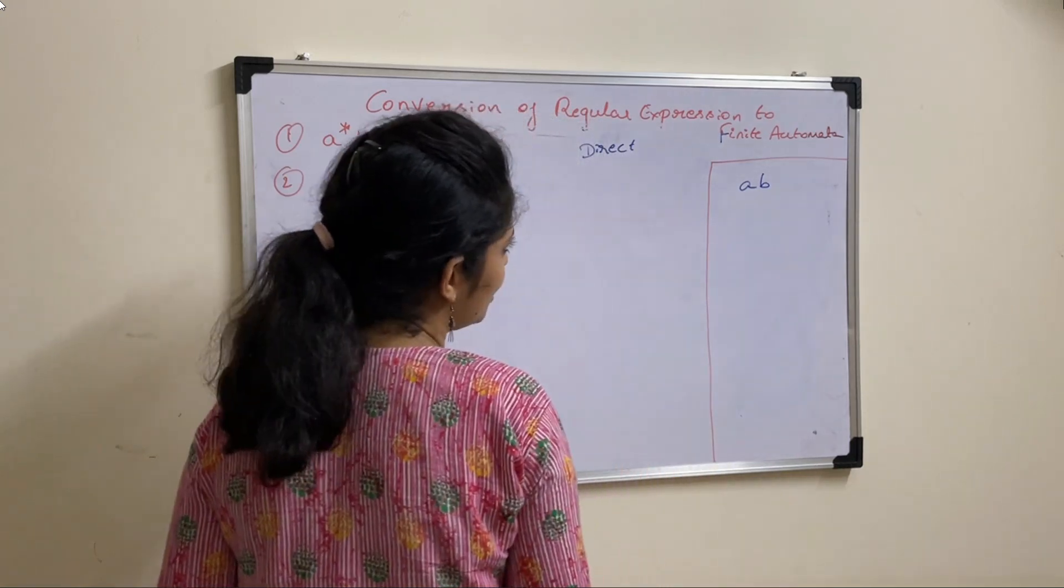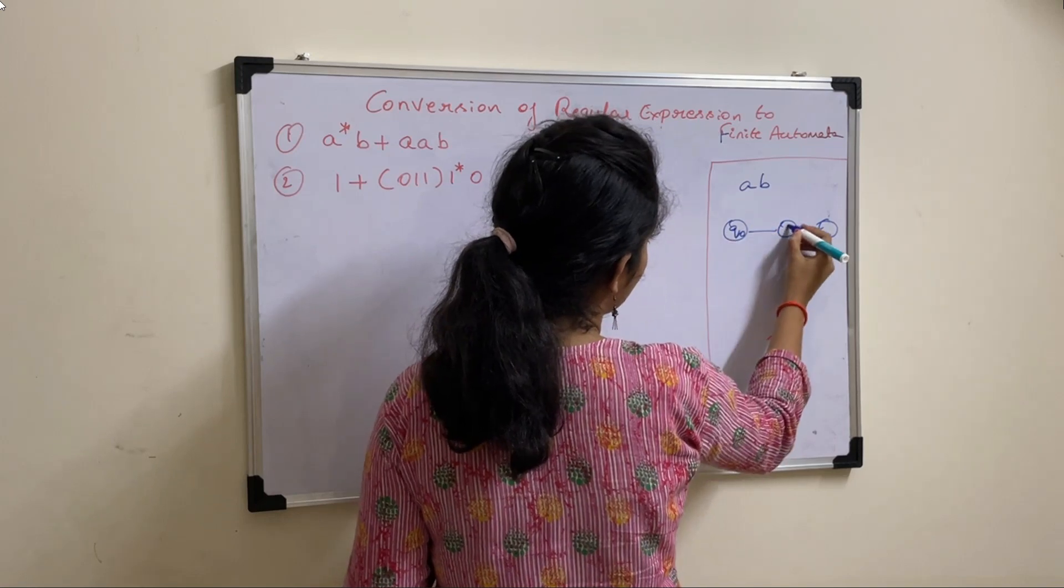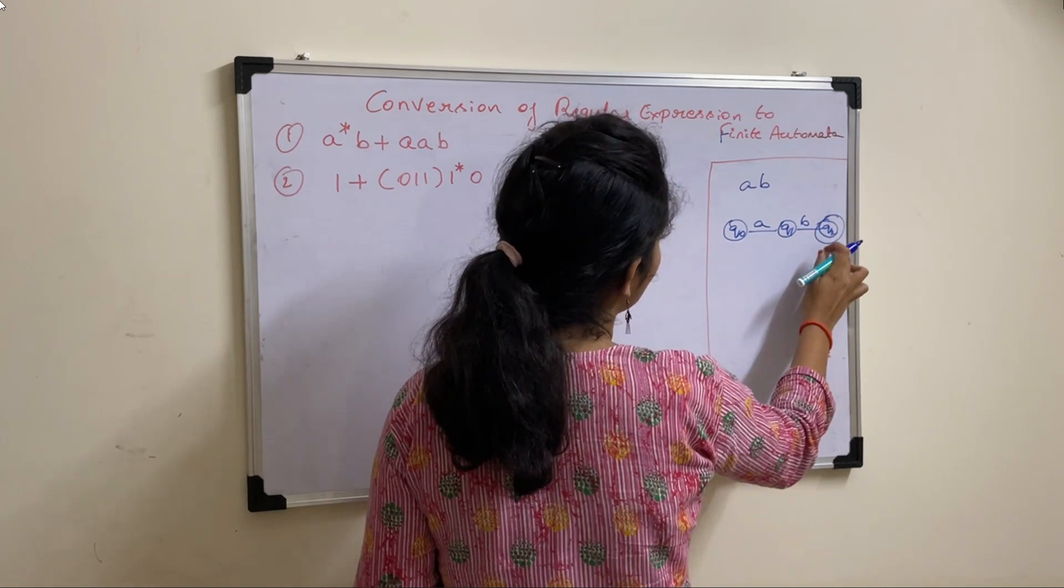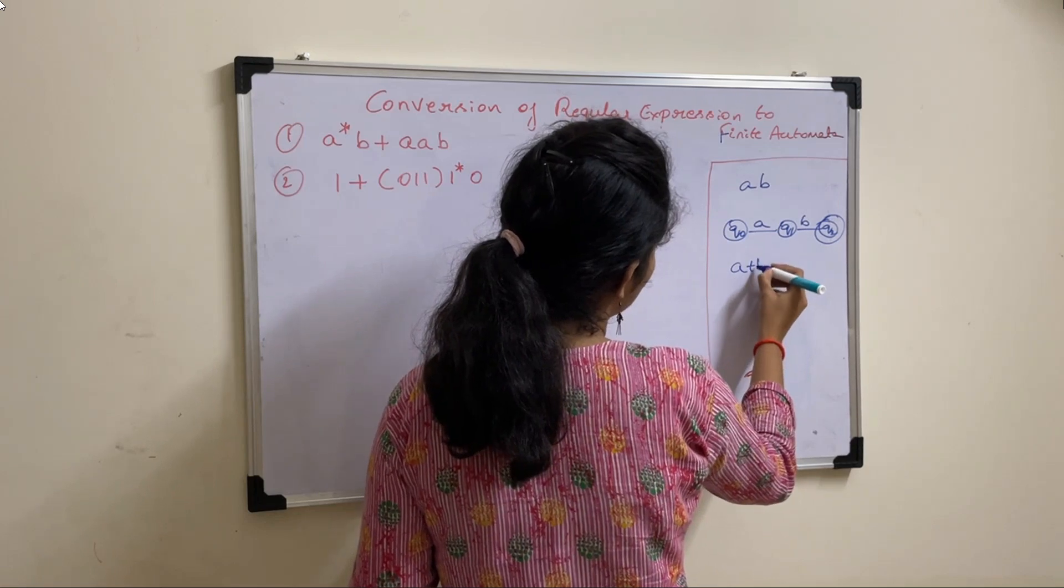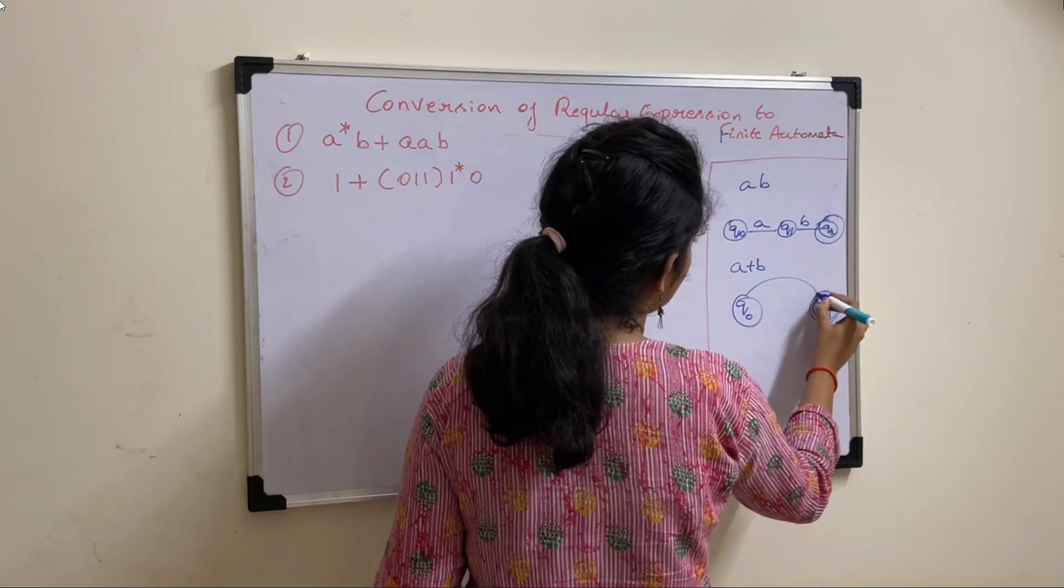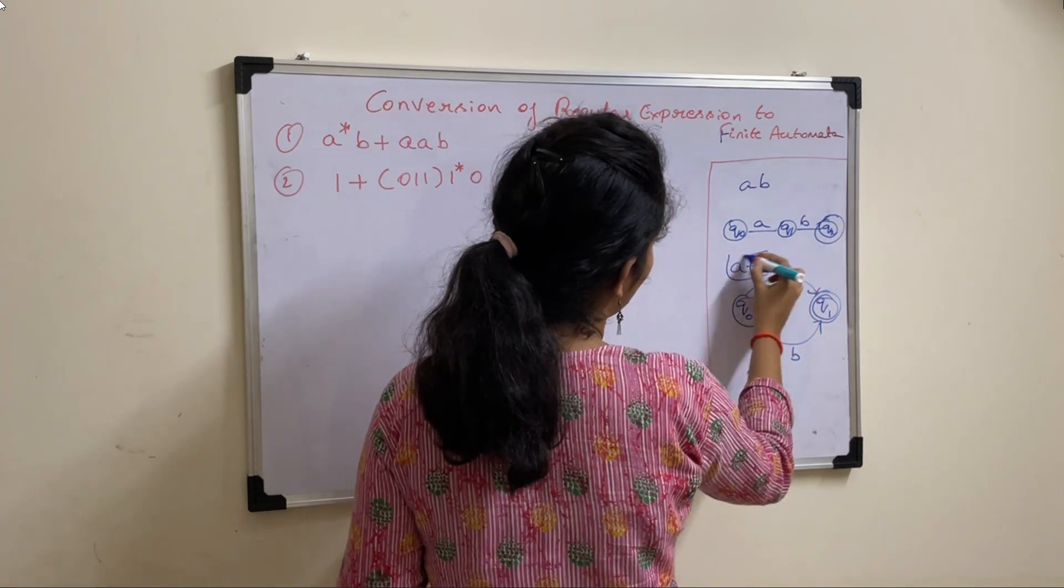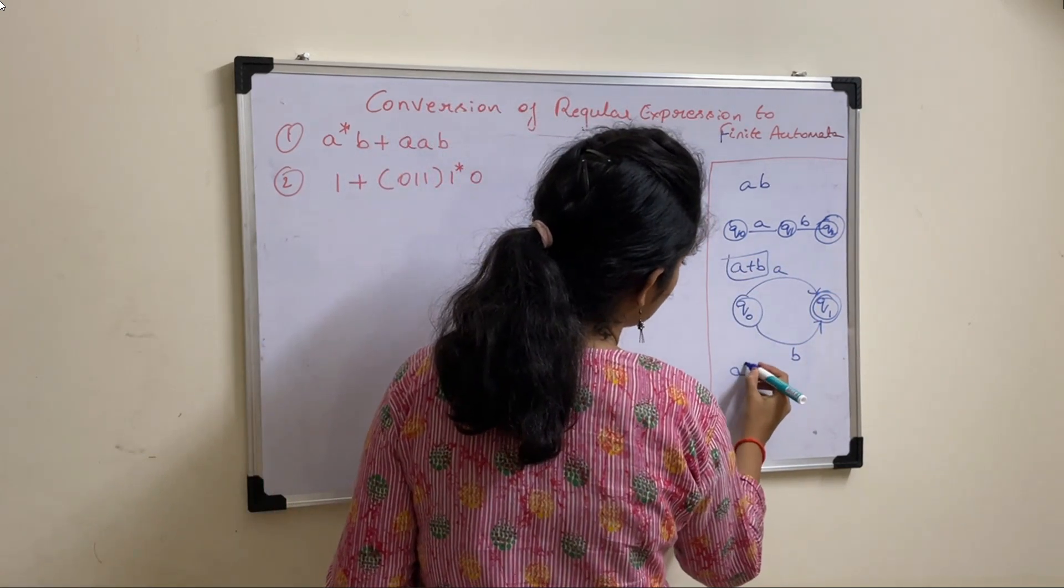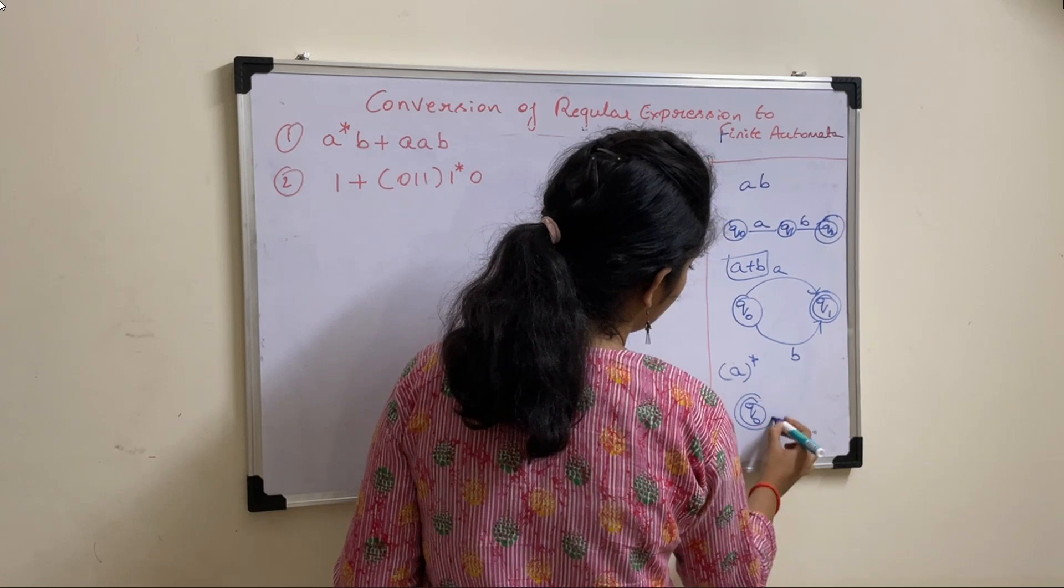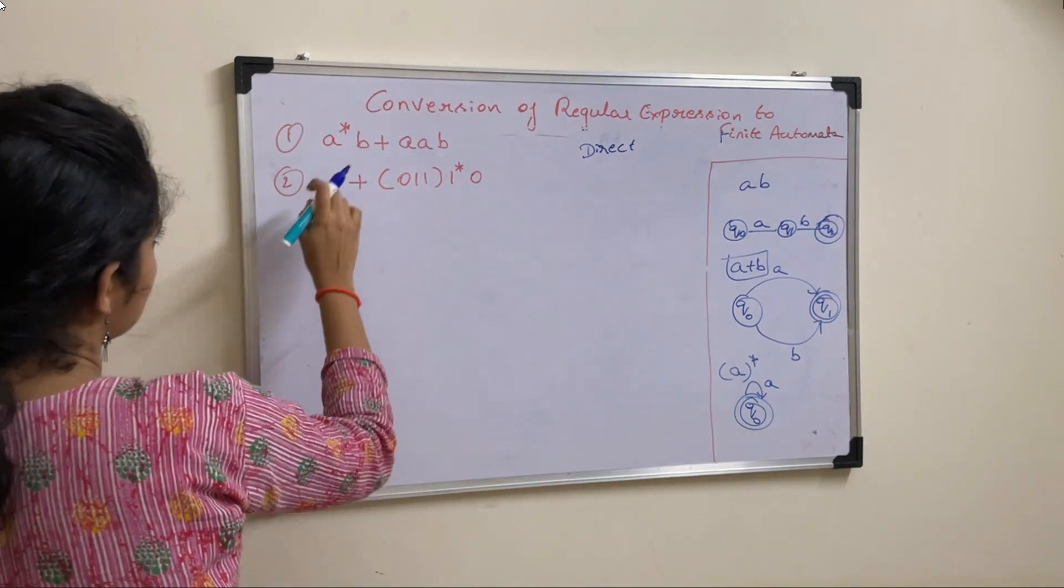Say suppose I have AB, then that should be written as, take states Q0, Q1, Q2 and AB should be written like this, while Q2 is the final state. Similarly, A plus B can be written as, take two states Q0, Q1 and AB. This notation is for A plus B, whereas for closure, if it is A closure, then it should be written as Q0, self loop, A. Using these notations, we will solve this problem.